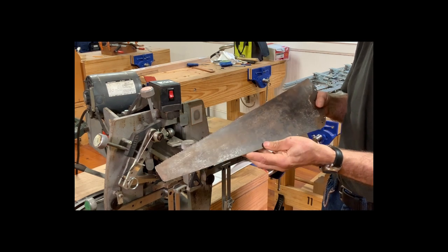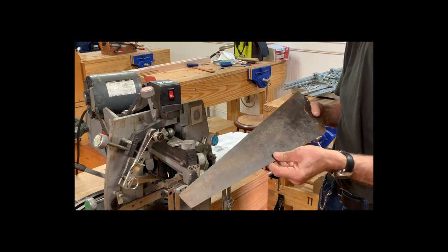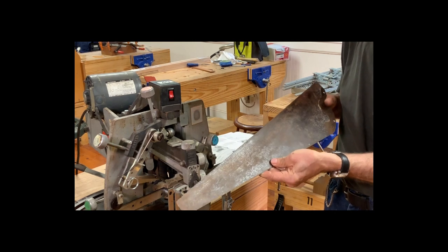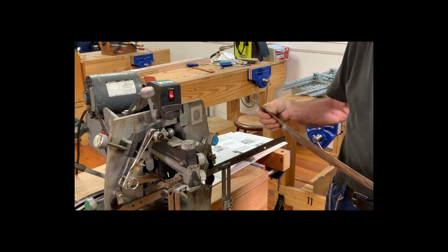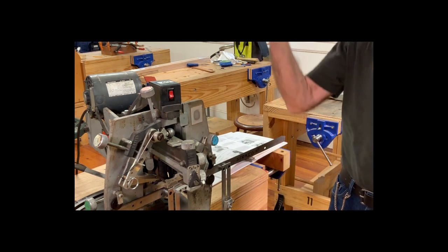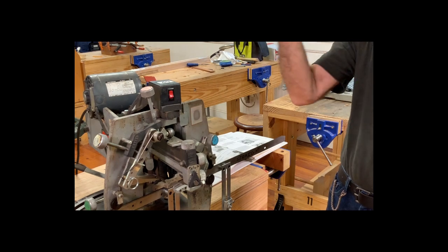But the older style saws made by Diston, Simons, Craftsman Sears, they have literally what is called cold-rolled tempered steel that you can bend.